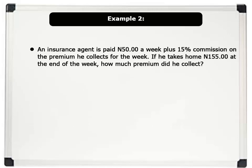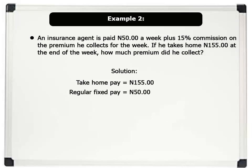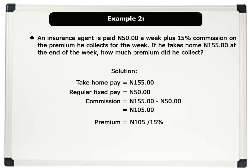Example 2: An insurance agent is paid 50 Naira a week, plus 15% commission on the premium he collects for the week. If he takes home 155 Naira at the end of the week, how much premium did he collect? Solution: Take home pay is 155 Naira. Regular fixed pay is 50 Naira. So his commission is 155 Naira minus 50 Naira, which equals 105 Naira. To find his premium, we divide his commission by the percentage on his commission. Note: 15% equals 15 over 100. So his premium is 105 Naira times 100 divided by 15, which equals 700 Naira. That's beautiful.